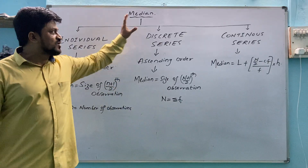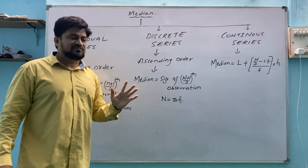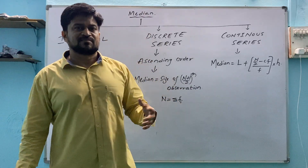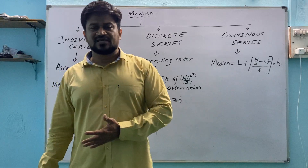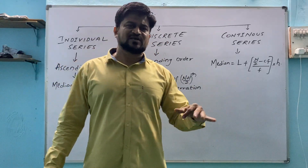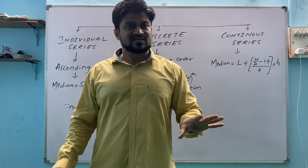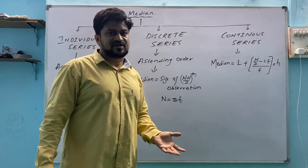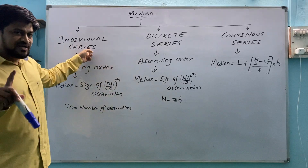Median represents the central value of the observations. Suppose in a class of 60 students, each got some marks out of 100 — one person got 30, the highest is 90, and in between there are values like 45 and 60. The middle value of all these marks is what we find through median. It is also a type of average.